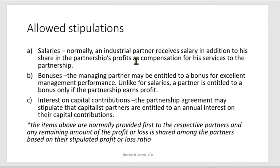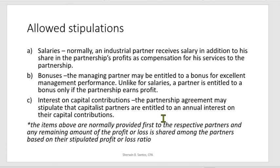Salaries are normally received by an industrial partner in addition to the share in partnership profits as compensation for services to the partnership. Bonuses: the managing partner may be entitled to a bonus for excellent management performance. Unlike salaries, a partner is entitled to a bonus only if the partnership earns profits — you can only allow a bonus if the partnership earns profit. Interest on capital contributions: the partnership may stipulate that capitalist partners are entitled to an annual interest on their capital contributions — a certain percentage, such as 2% or 20%, of beginning capital, ending capital, or weighted average capital contribution, depending on the stipulation.